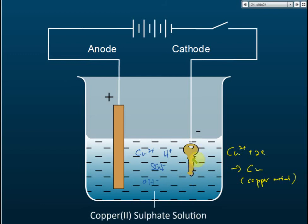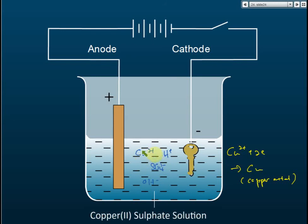Another thing you need to know is that the copper ions in the electrolyte will run out soon. Once the ions deposit on the surface, there will be no more copper ions left in the electrolyte. So we must have a supply of copper from another source, because relying only on the electrolyte will finish very fast.